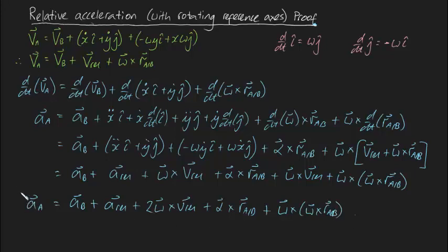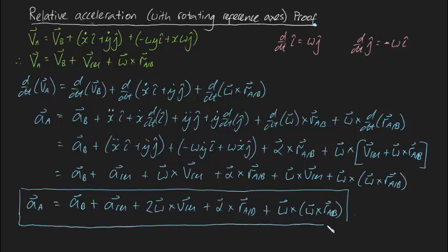And there we have it. This is the formal expression for the absolute acceleration of point A when we're dealing with rotating reference axes. So I know it looks a little bit daunting to see an equation consisting of so many terms, but it turns out that the intuition behind each of these terms can be quite easily explained, and I do so in my summary video. Anyway, guys, I hope this proof made sense, and I hope you learned something. Cheers.